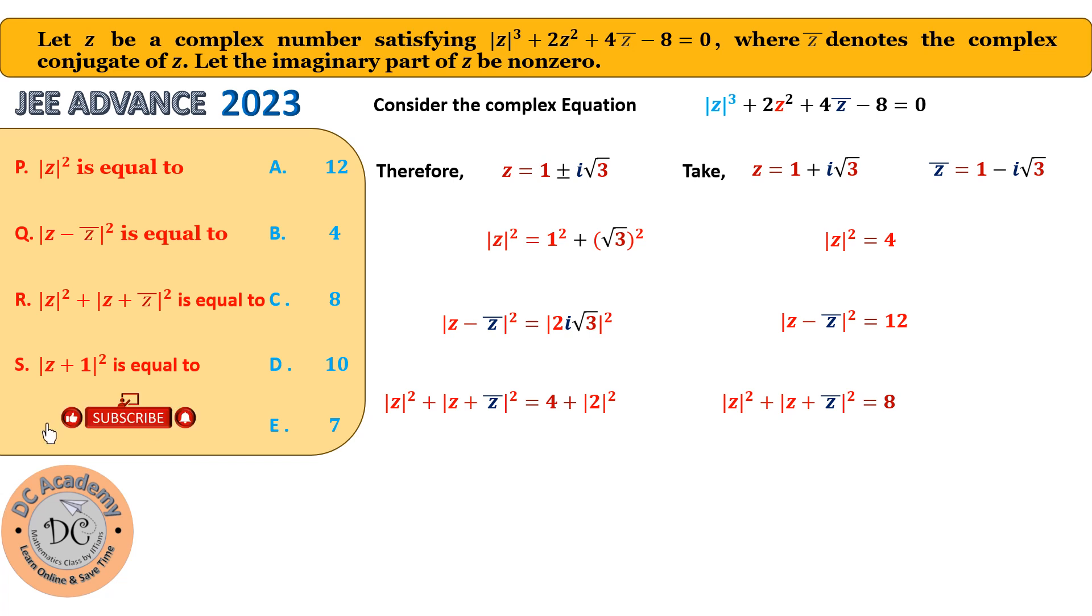Let's go ahead and find out the last one that |z + 1|², which is obviously |2 + i√3|². Using the definition of absolute value, we can say that it will be 2² = 4 plus 3, which is 7. So that's why |z + 1|² = 7. So therefore, we easily write down that P is equivalent to B and Q is equivalent to A, R is equivalent to C only, and S is E. And that's it. So this is the answer. Hope you understood the problem.